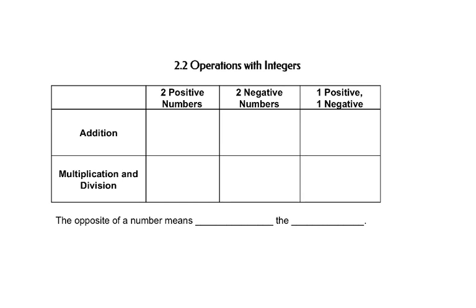So first of all, let's talk about how we put things together. In addition, if you add two positive numbers, you still get a positive number. And if you add two negative numbers, you still get a negative number.